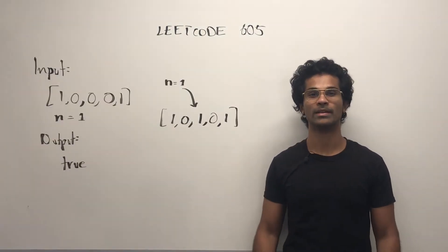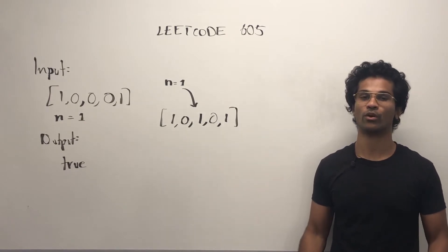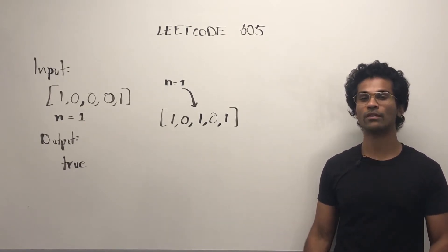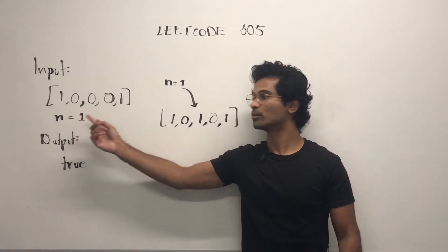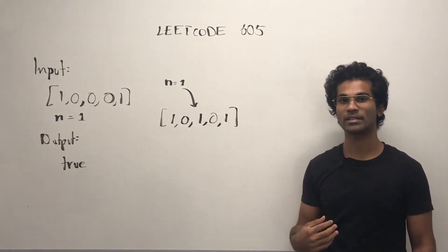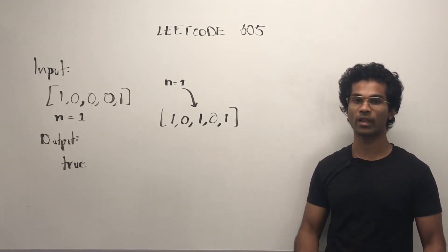The input is going to be an integer array and an integer, and the output is going to be boolean true or false. So let's find out what they're asking. We have to take the input number n equals 1 and see if we can place that many number of ones into the input array. The 1 represents a flower.